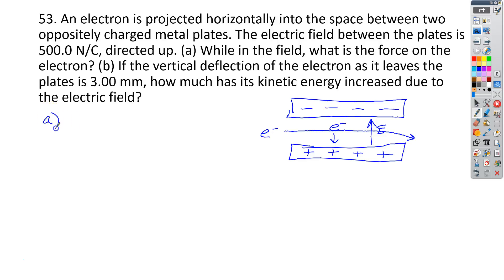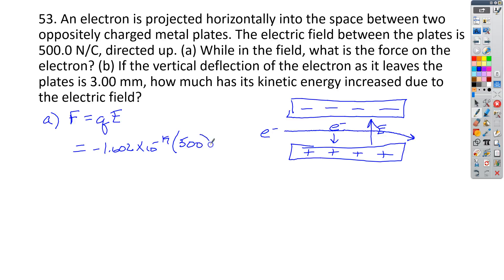To find the force on the electron, we use F equals charge times the electric field. The charge is negative 1.602 times 10 to the negative 19th, and the electric field is 500 newtons per coulomb upward. We end up with 8 times 10 to the negative 17th newtons, and that force is directed downward.